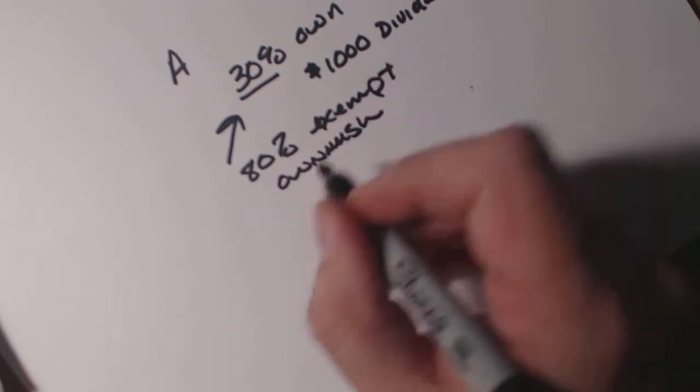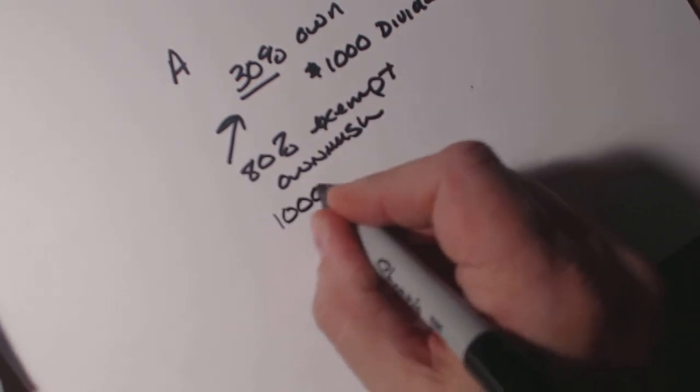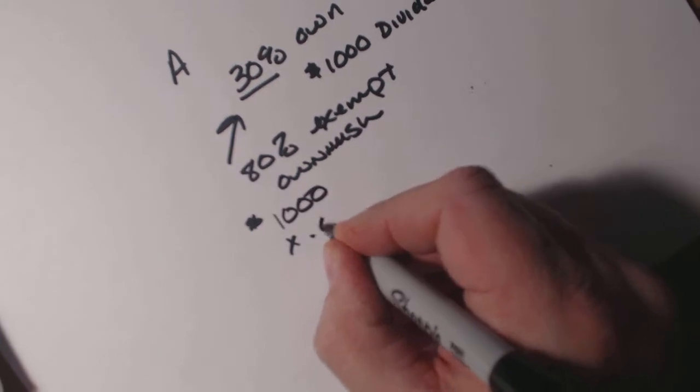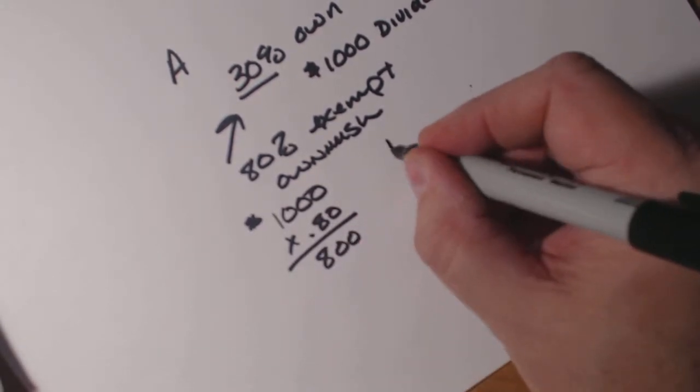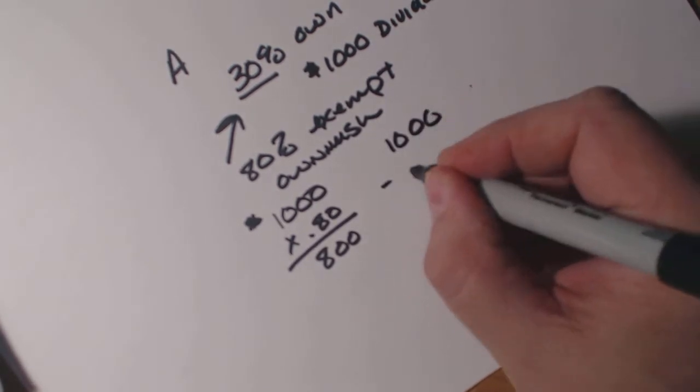So, in this particular case, you have $1,000, and you multiply it by 80, which would be $800. Or you take $1,000, you minus $800.